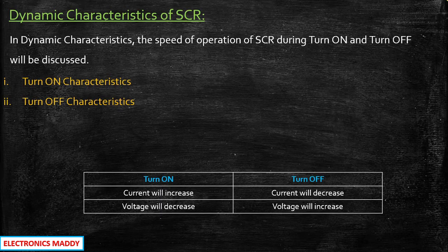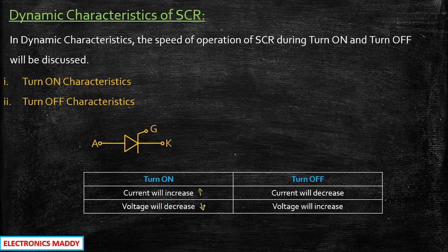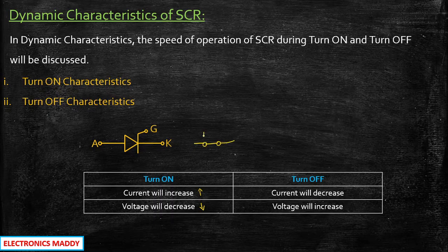You need to remember one basic concept. I've considered the symbol of thyristor or SCR — you can also refer to it as thyristor. Whenever the device is turned on, current will increase. And what happens to the voltage? The voltage will decrease. The reason is that when it is turned on, the device acts as a short circuit, so the current will increase and the voltage will start decreasing until it equals the on-state voltage drop.